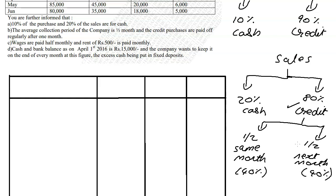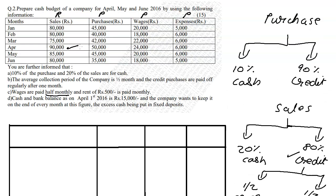Wages are paid half-monthly. When an expense is paid half-monthly and it's not already split by a specific percentage, you can simply add the previous month and current month and divide by two to get the answer.